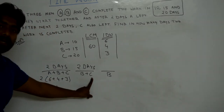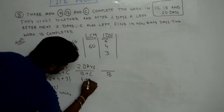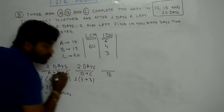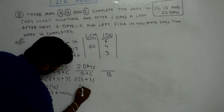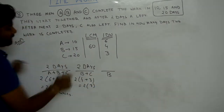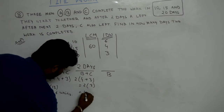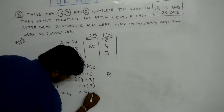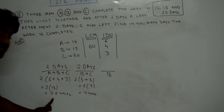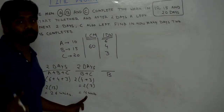In the next 2 days, B and C worked. B completes 4 units per day and C completes 3 units per day. Together in 2 days, they completed 7 into 2, that is 14 units of work.